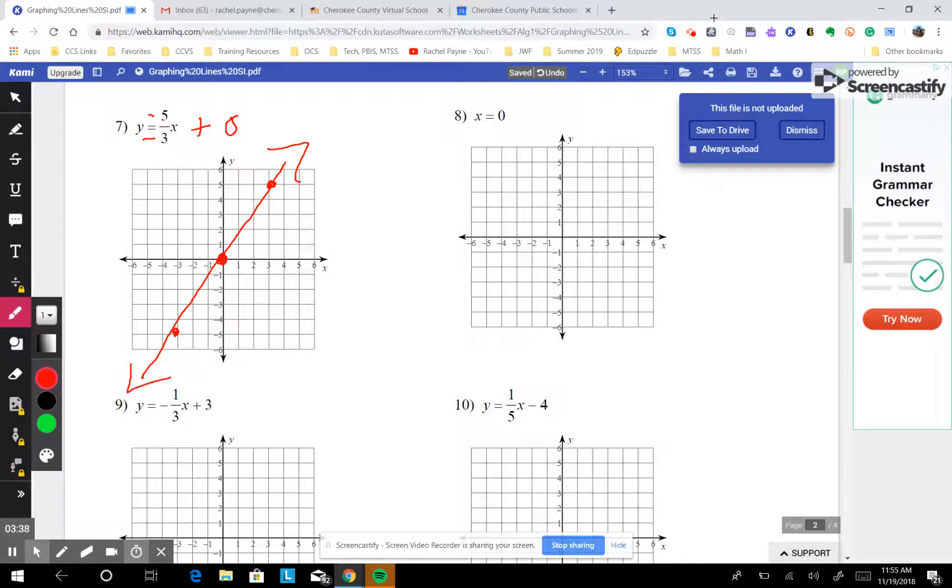This one says it only touches the x axis at 0. So x axis looks like this. Ooh, you know what? I messed up on that one. It has to pass through the x axis at 0. So it's right here.